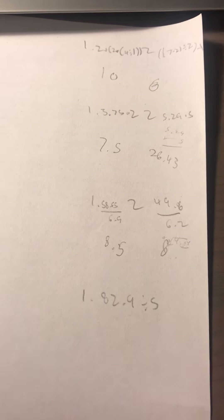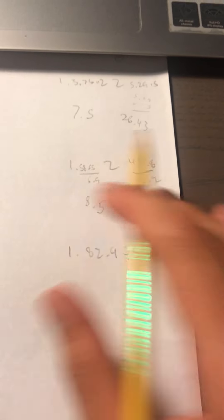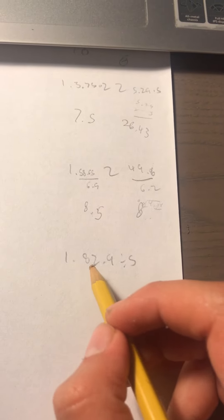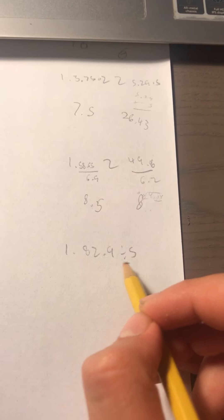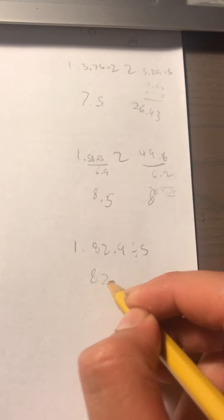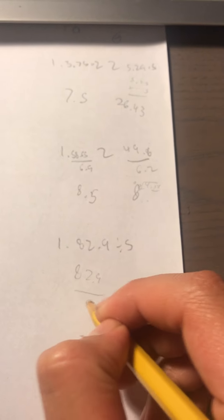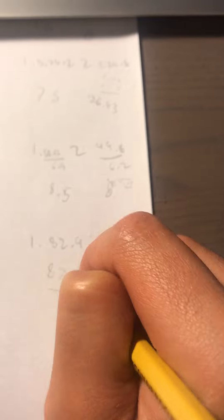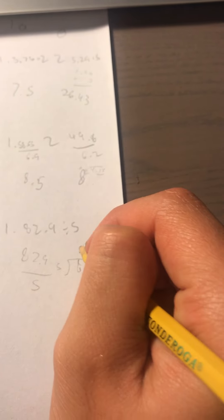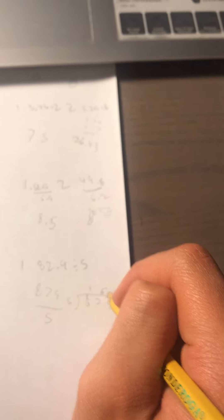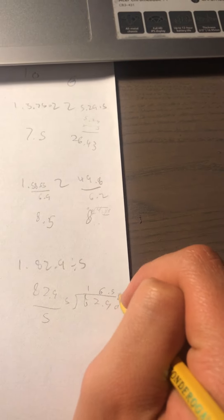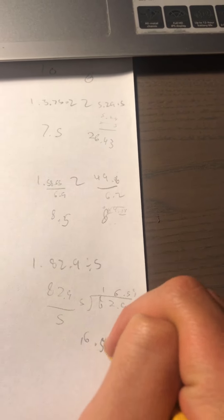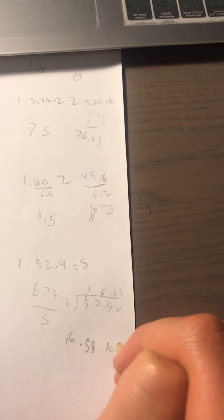So now we're going to move on to the next one. For this one, it's 82.9 kilometers in 5 hours. So how many kilometers per hour? We do 82.9 over 5, so 82.9 divided by 5. So that's going to be 16.58, 16.58 kilometers per hour.